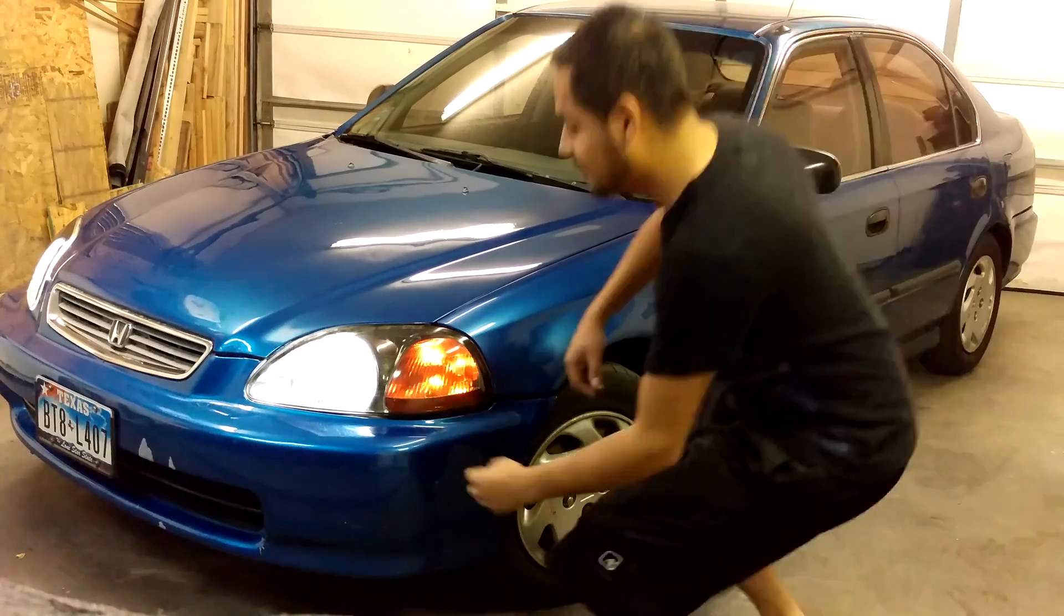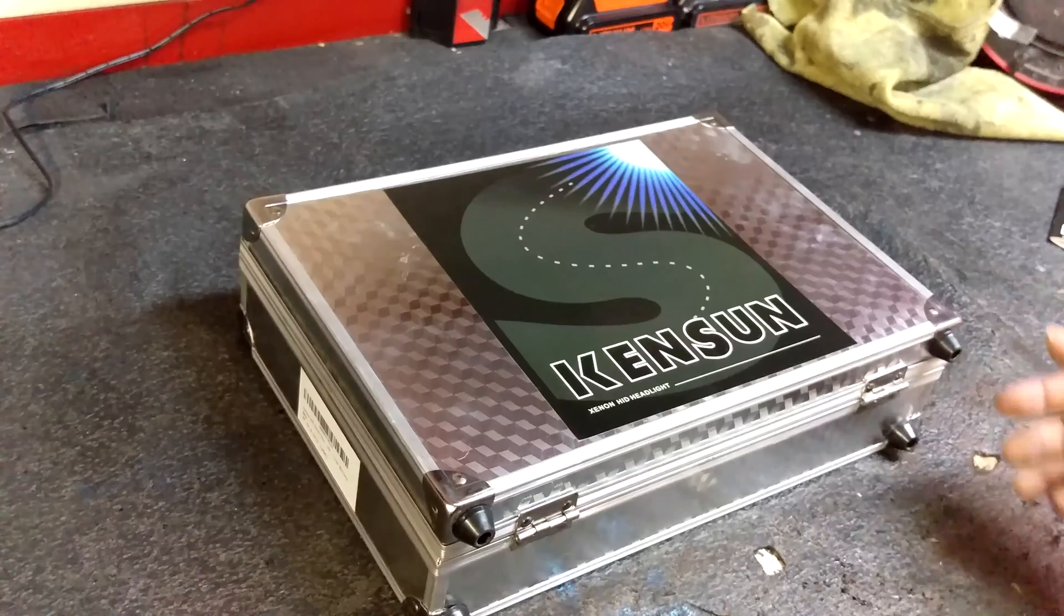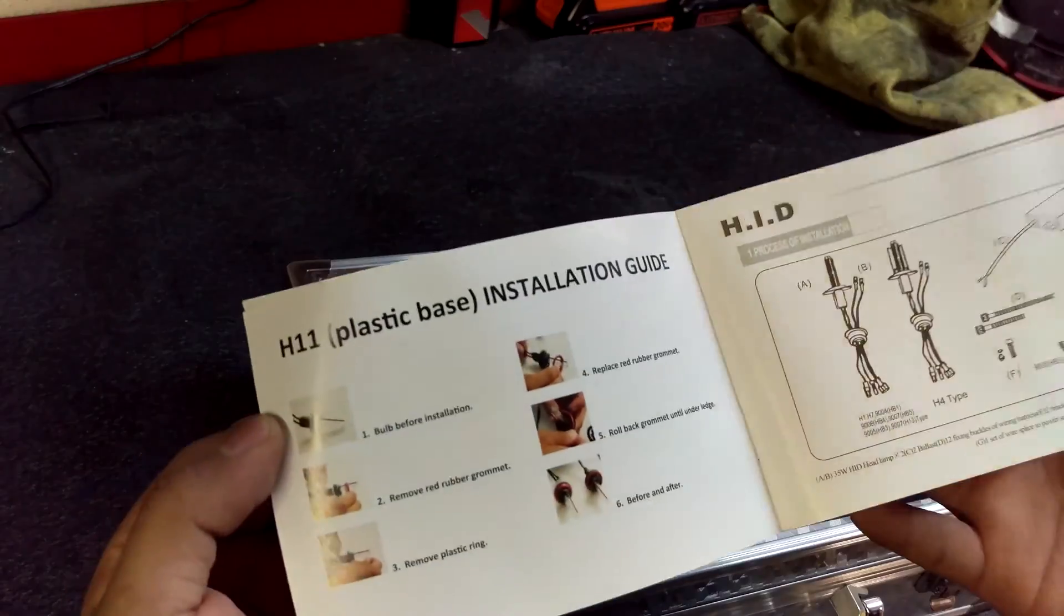About a year ago, I bought a Kensson HID kit system. It came in a nice shiny metal looking box and actually came with English instructions.